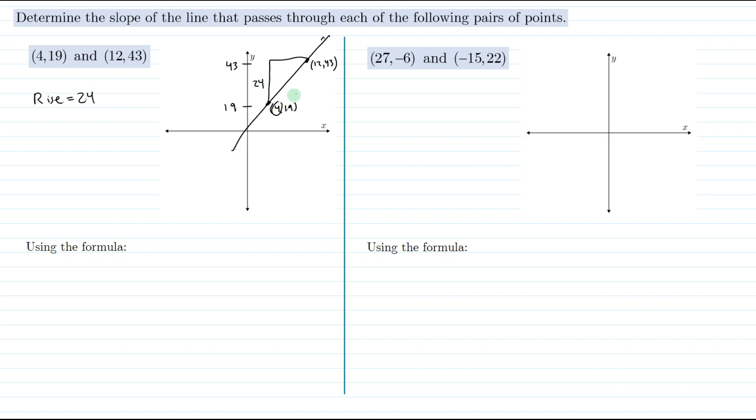And the run: we went from an x value of 4 to 12. I'll mark that on the x-axis. We went from an x value of 4 to an x value of 12, so we ran 8. 12 minus 4 is 8. So our run equals 8.